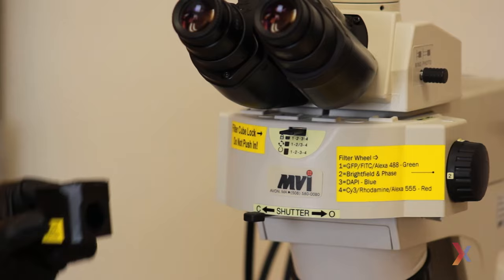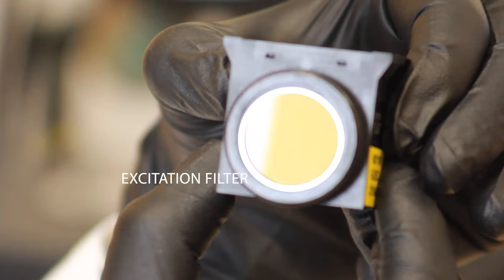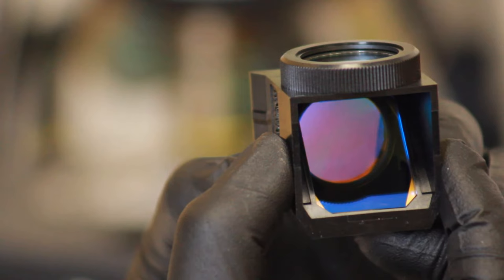Remember we use a filter cube to separate out our excitation and our emission light. So let's take a look at a filter cube up close. So first we have our emission filter, our excitation filter, and the dichroic mirror positioned between them at a 45 degree angle.